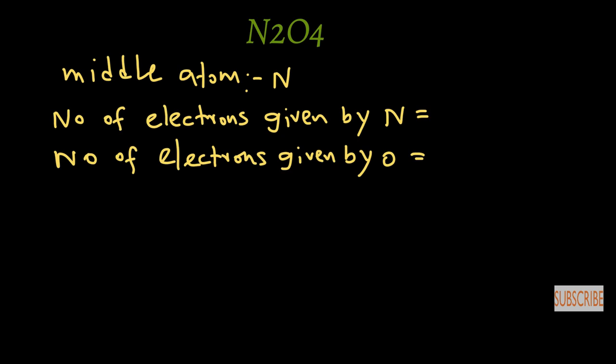Next, consider the number of electrons given by nitrogen. Nitrogen is a group 5 element, so nitrogen gives 5 electrons. In N2O4 there are two nitrogen atoms, so nitrogen gives a total of 10 electrons.